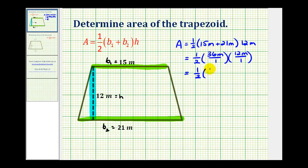I'll write 36 as 2 times 18 meters, all over 1, times 12 meters over 1. The 2 over 2 simplifies to 1.